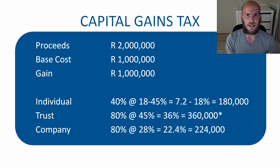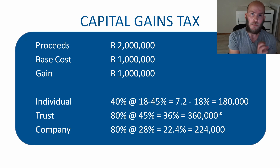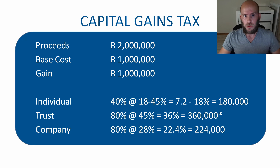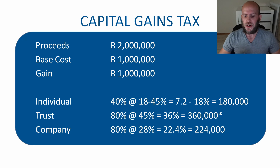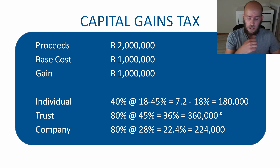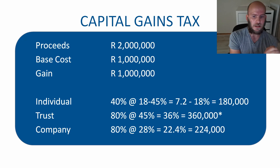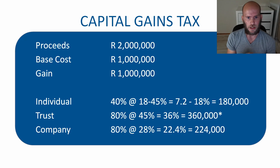The trust therefore pays 36 percent marginal capital gains tax — double what an individual pays. If a company had the rental property and sold it, the company has an inclusion rate of 80 percent at the flat 28 percent tax rate, working out to a 22.4 percent marginal CGT rate. So if a company sold the property, the CGT would be R224,000. Again, in an individual's hands there is less capital gains tax to pay.